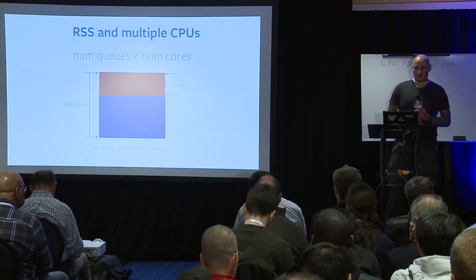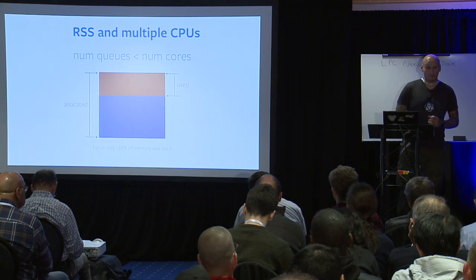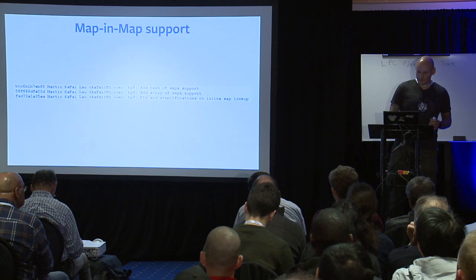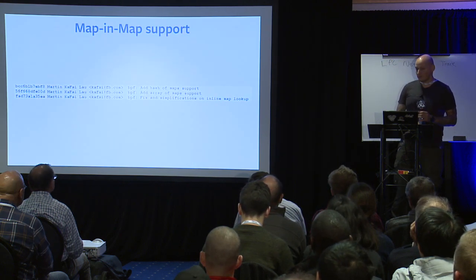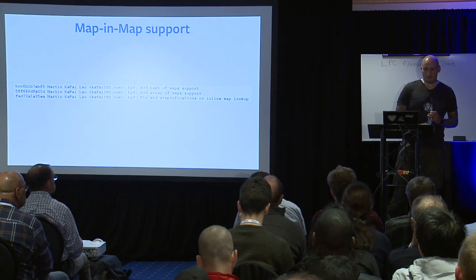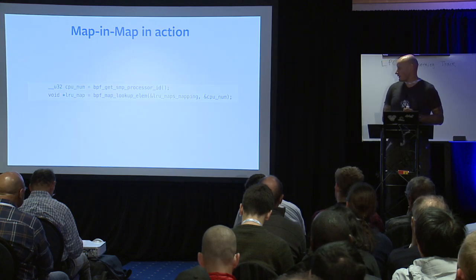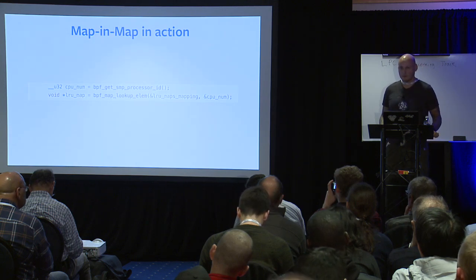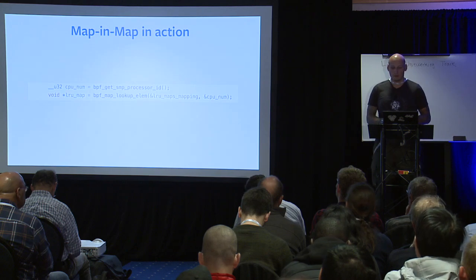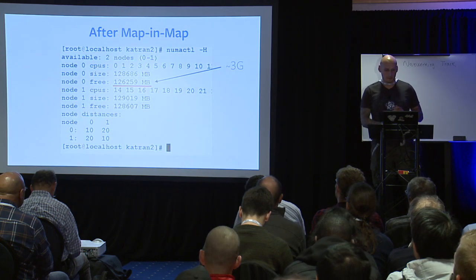We also looked at how we configure our NIC — we have one-to-one mapping between receive queues and CPUs. The problem with BPF per-CPU maps is that by default BPF allocates space for every CPU in the system, even ones not responsible for packet forwarding. Martin came up with BPF map-in-map: a special map type where the key is an index (such as CPU ID) and the value is a pointer to another BPF map. This lets us allocate memory only for forwarding cores. Before vs. after: we got 3 gigabytes of memory back from each server.